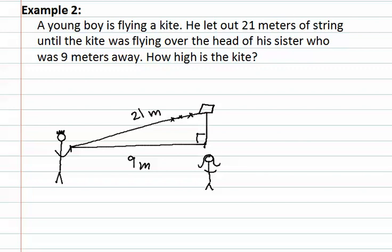We then can see that a right angle has formed over the head of his sister. Remembering that going directly across from a right angle helps us to find C or the hypotenuse, we can label it. Now we can label A and B as we choose, so let's label the empty side as A and the other leg as B.